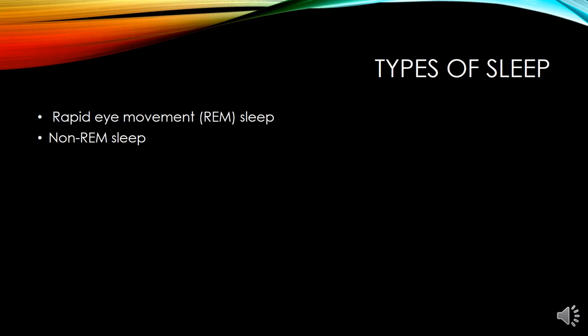There are technically two types of sleep. The first is rapid eye movement sleep, known as REM sleep. It is a kind of sleep that occurs at intervals during the night and is characterized by rapid eye movements, more dreaming and bodily movements, and faster pulse and breathing.